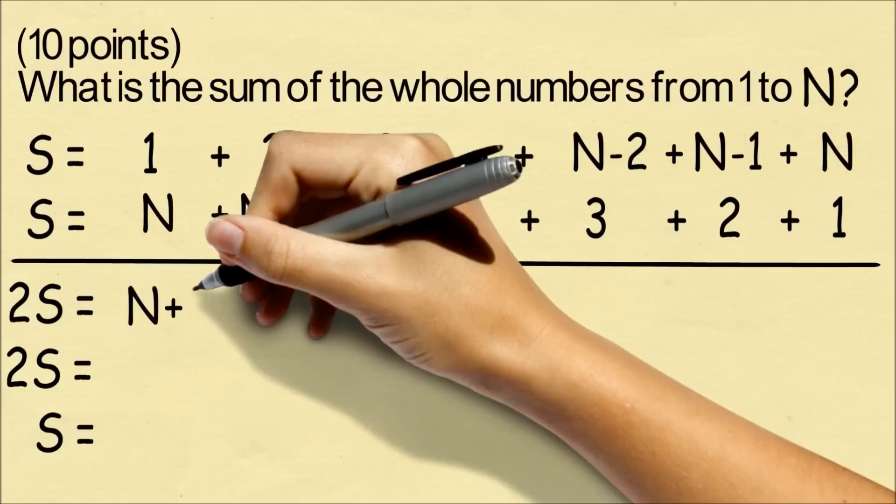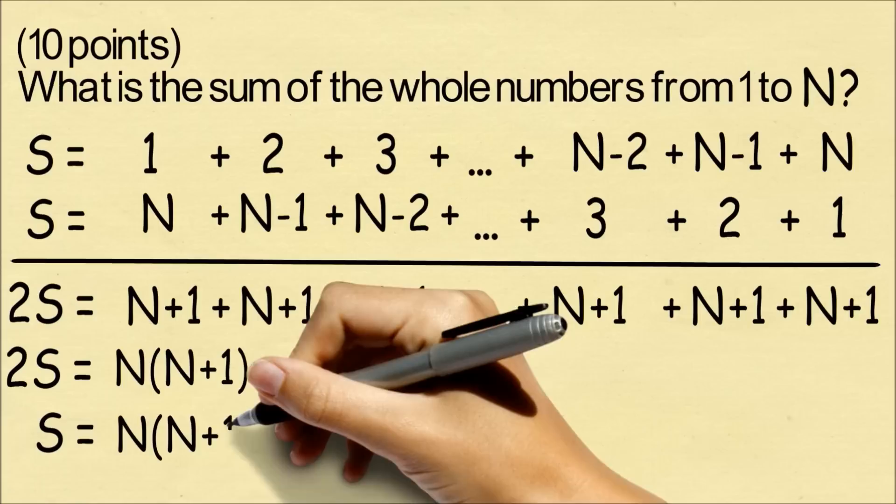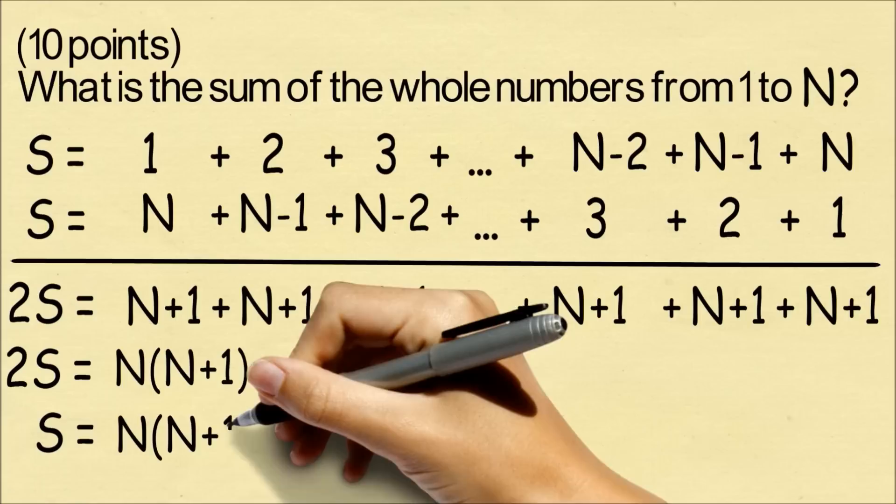He's now replacing the terms for the problem up to N. Every column sums up to N plus 1. So 2 times the sum is N times N plus 1. He will now go ahead and split the product so that the sum is N times N plus 1 over 2.